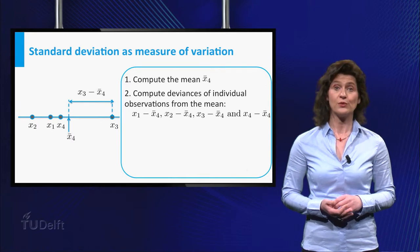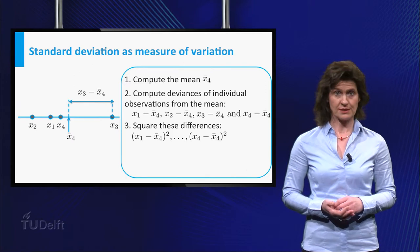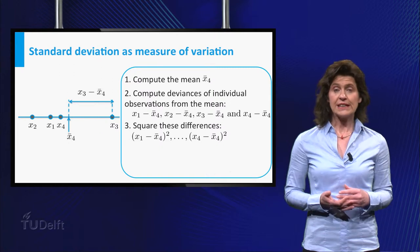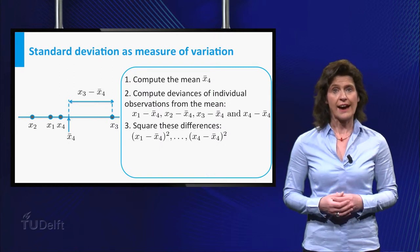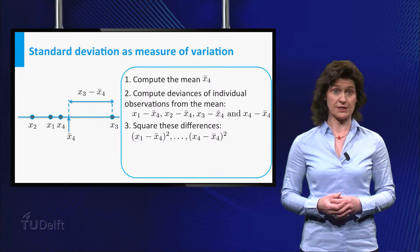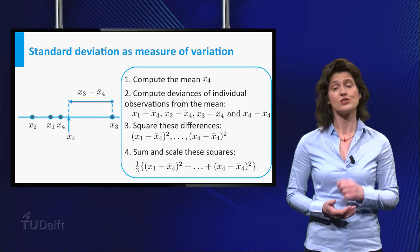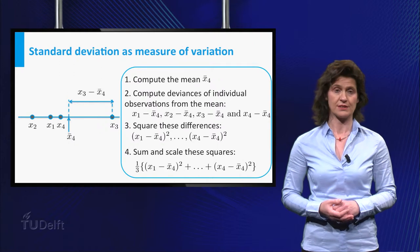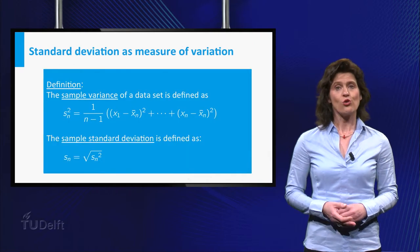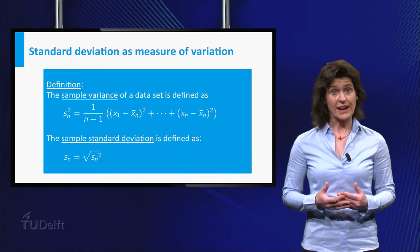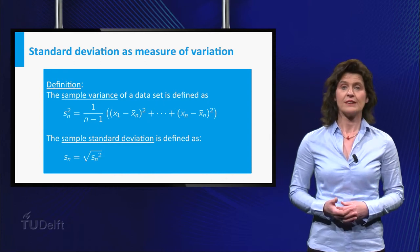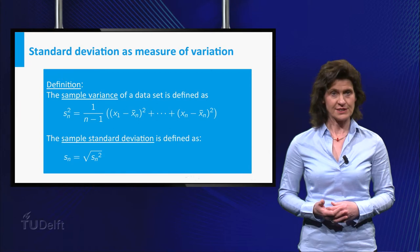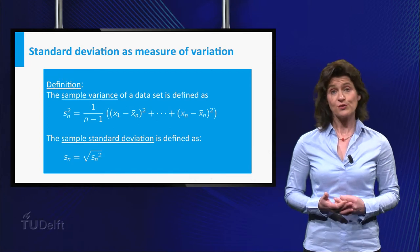This way you obtain four non-negative numbers. It is intuitively clear that high variation in the data will yield on average high value of these square differences. Then sum and scale these squares. The so-called sample variance is defined by this formula and computed by this procedure. Finally, the standard deviation is the square root of the sample variance.